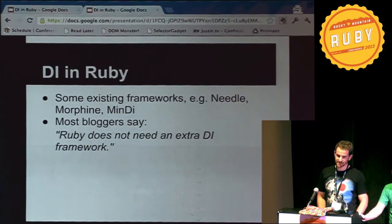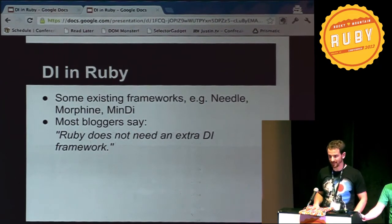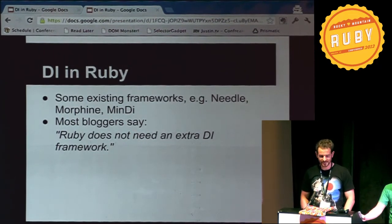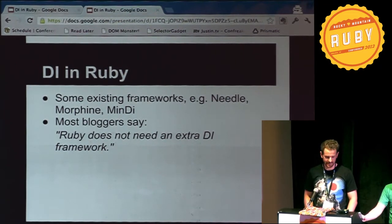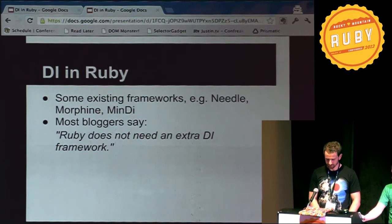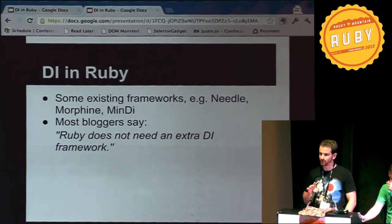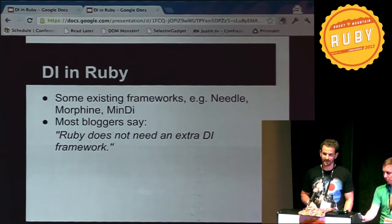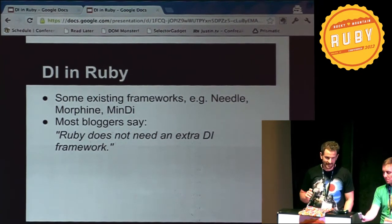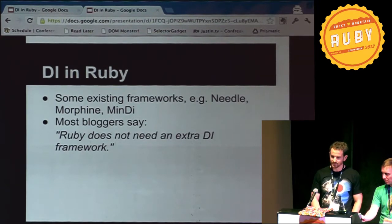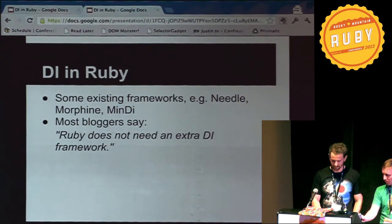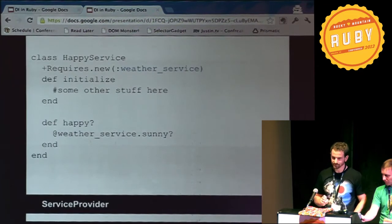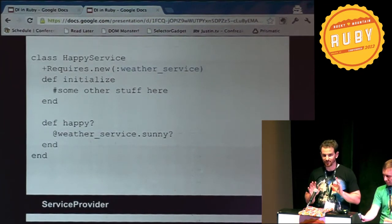Dependency injection in Ruby is an interesting topic. There are actually a few frameworks out there — some of them are Needle, Morphine has recently been started by a guy at GitHub, and there's Mindy. But if you search for dependency injection in Ruby, you will see most people say you don't need it, and Ruby has some built-in functionality to deal with that. Quite honestly, I do not totally agree. I think there is a place for dependency injection in Ruby, and I came up with my own little framework for dependency injection.